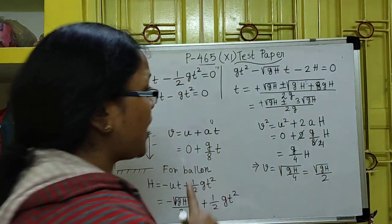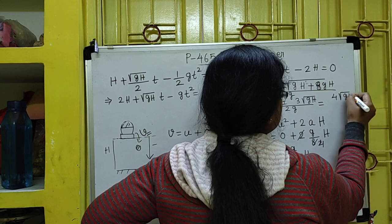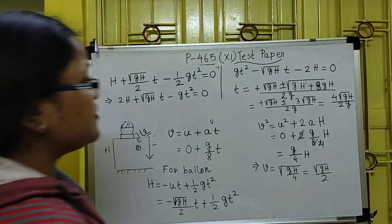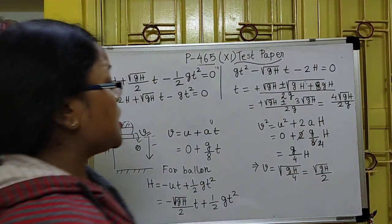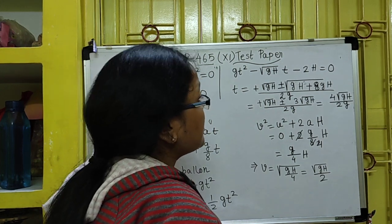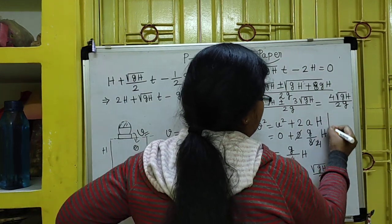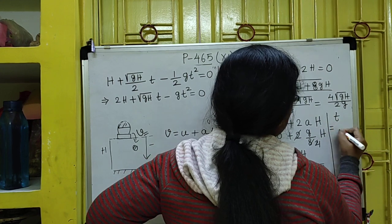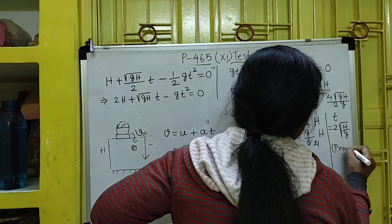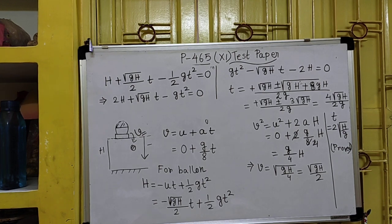Taking the positive sign: T = [√(GH) + 3√(GH)] / 2G = 4√(GH) / 2G = 2√(H/G). The negative sign gives a negative time, which is not physically possible. Therefore, T = 2√(H/G), which is the required result.